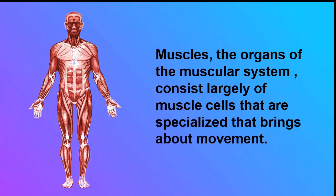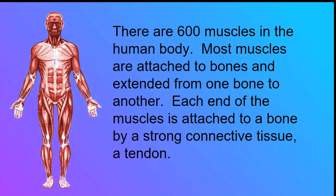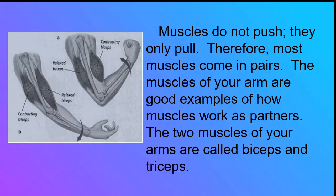Muscles, the organs of the muscular system, consist largely of muscle cells that are specialized and bring about movement. There are 600 muscles in the human body. Most muscles are attached to bones and extend from one bone to another. Each end of the muscle is attached to a bone by a strong connective tissue called a tendon. Muscles do not push — they only pull. Therefore, most muscles come in pairs. The two muscles of your arms are called biceps and triceps.